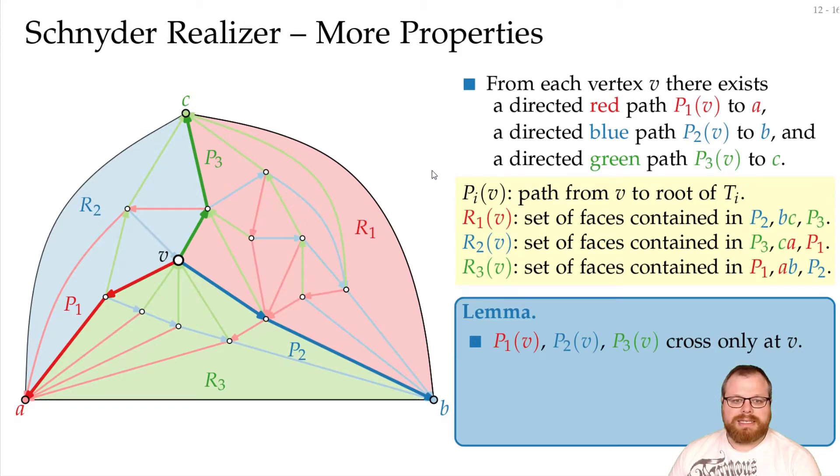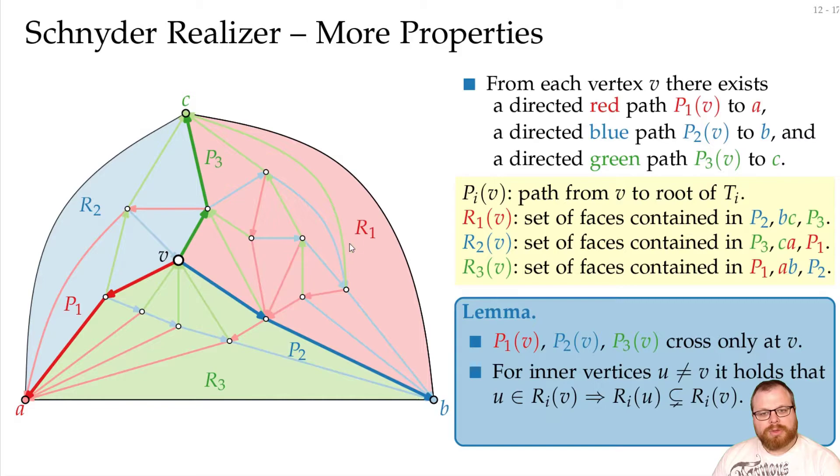And these regions are nicely nested. Let's say we pick any other vertex inside the red region, for example, this one here. Then the red region of this vertex is a proper subset of the region of v. If we look at this example here, how does the red region look like here? It's between the green path and the blue path, so it is this part up here. And that means that we have a proper subset. Why is that the case? Well, if we follow the green path from u, it cannot cross this path here.